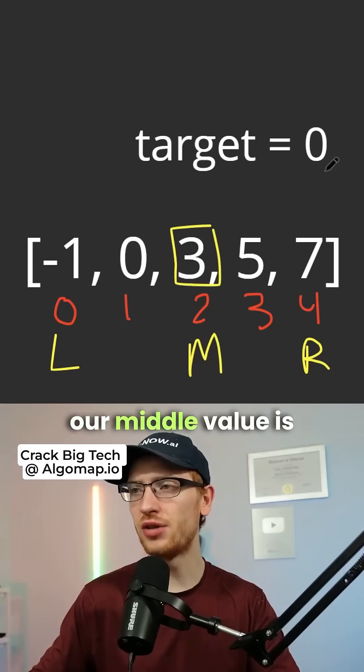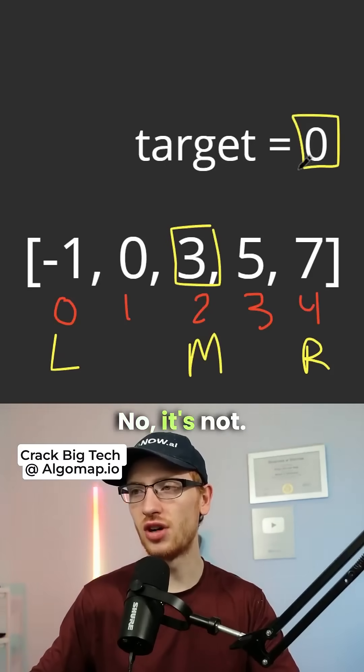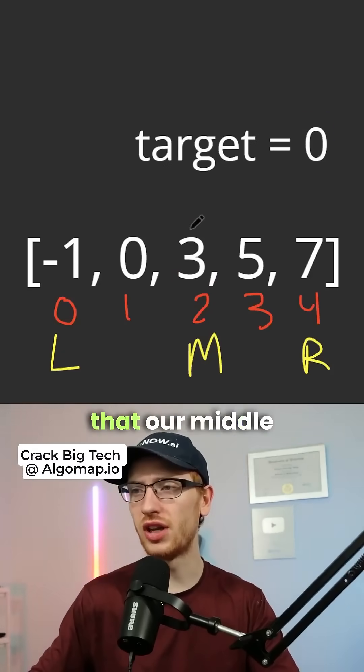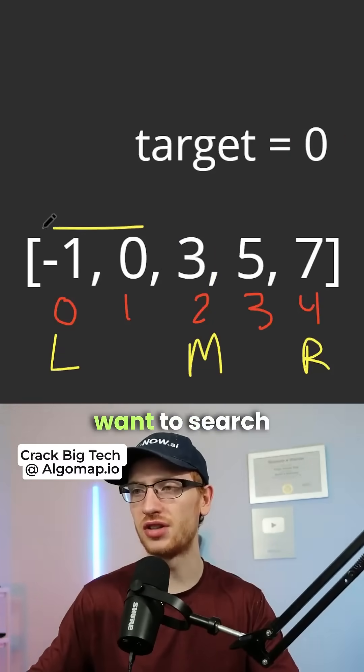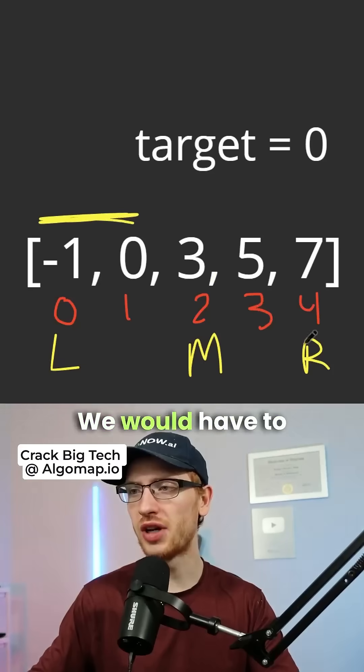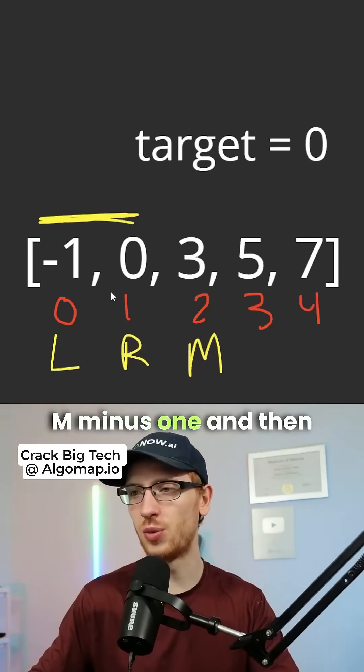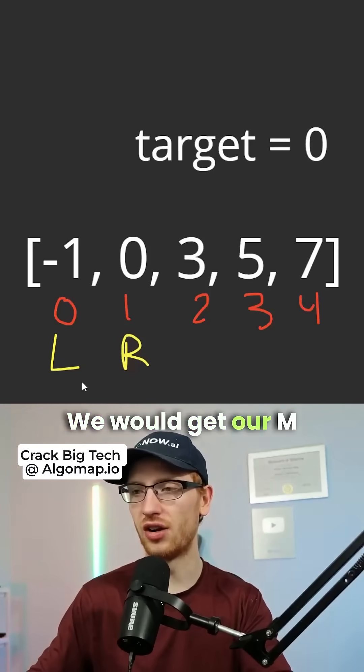Then we would check if our middle value is equal to the target. No, we haven't found it, but we know that our middle value is too big. It is bigger than the target. That means we would want to search in this range. So to search in this range, we would have to set r to be m minus 1 and then do this again.